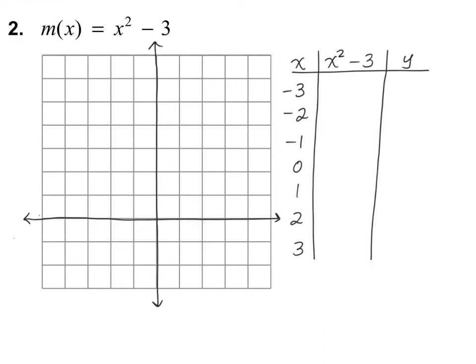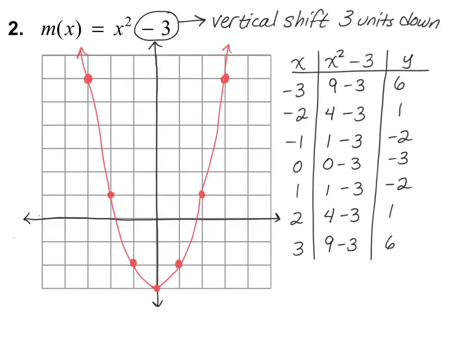I've helped you get started on number two — I'd suggest plugging in some points. Go ahead and pause the video and see if you can finish number two on your own. Here's what you should have graphed. You'll notice a mirroring effect: outputs of six, one, and negative two on each side, so the vertex is at zero comma negative two. It took the original function x squared and shifted it down three units, which is what we'd expect because we have a minus three — so it's a vertical shift three units down.